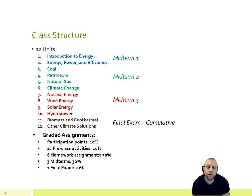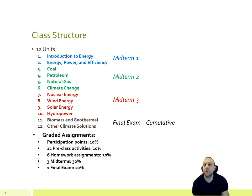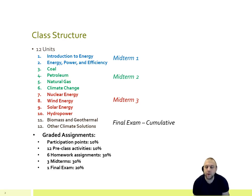Looking at the class structure, the units give you a sense of how we've organized things. The first unit covers introduction to energy — what energy is, power, and efficiency. That's midterm one, and it only covers two units, so there's not a lot of material to study. The second midterm covers the three fossil fuels and climate change as a common theme. Midterm three covers nuclear energy, wind energy, solar energy, and hydropower. The midterms aren't cumulative — they only test content from each of those sections.